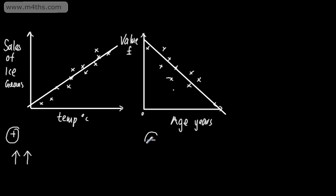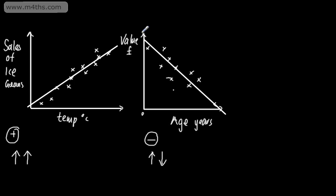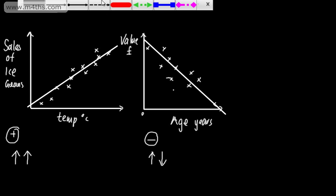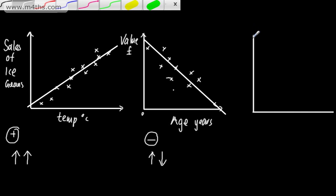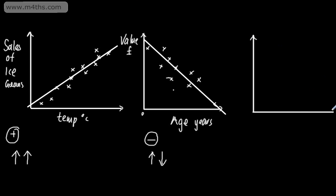So with negative correlation, as one increases, the other decreases. For example, going back to temperature — if instead of ice creams we had hot chocolate, as the temperature increases, we would expect the sale of hot chocolate to decrease. That's an example of negative linear correlation. The value of the car reduces as the age increases. What we're now going to look at is no correlation — and when I say no correlation, this is no linear correlation. There might be another relationship going on.